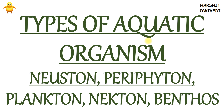In this video, I will be talking about types of aquatic organisms. The types I am going to discuss are neuston, periphyton, plankton, nekton, and benthos.